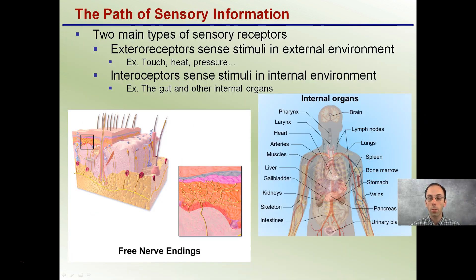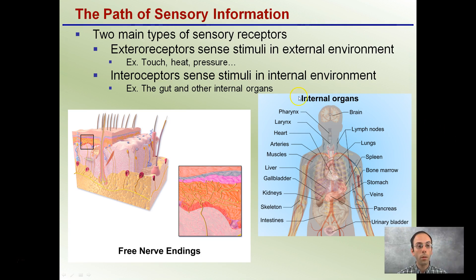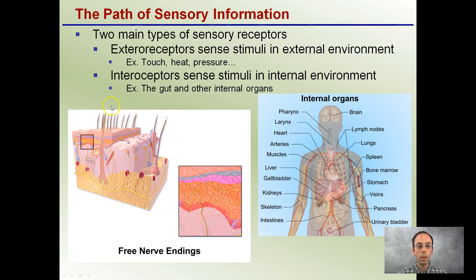There are two types of sensory receptors. Exoreceptors, as the name implies, sense stimuli in the external environment — things like touch, heat, or pressure. Interoceptors are sensitive to the internal environment, such as the gut or other internal organs. Our free nerve endings are spread throughout; in the skin, for instance, they sense the presence of heat. Internal organs also all need sensory information about what may be occurring, even though we may not think we can feel them directly — the body still needs that information.